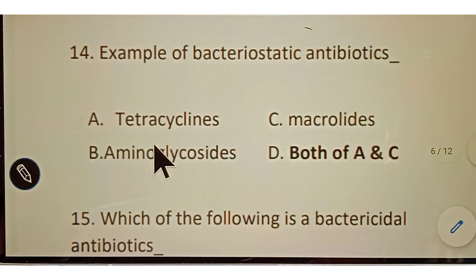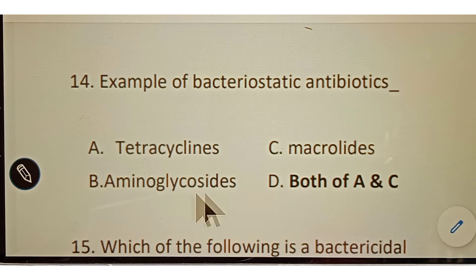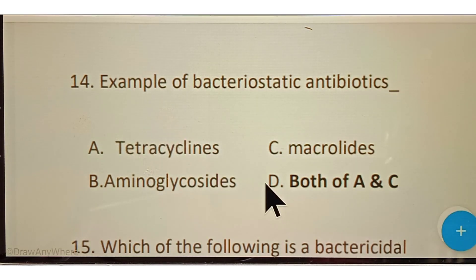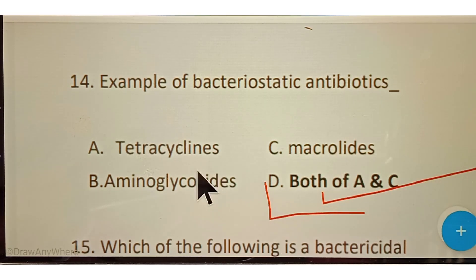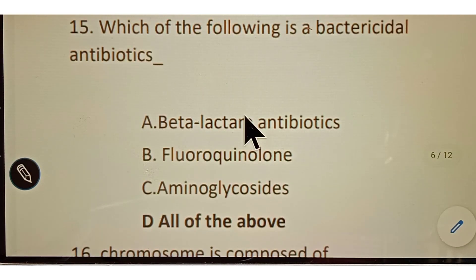Question number fourteen: examples of bacteriostatic antibiotics. Options given: A. Tetracycline, B. Aminoglycosides, C. Macrolides, D. Both A and C. The correct answer is option D, both A and C. Tetracycline and Macrolides are examples of bacteriostatic antibiotics, which prevent the growth of bacteria.